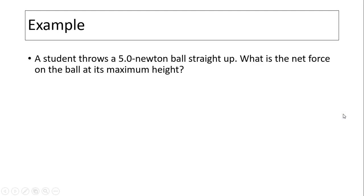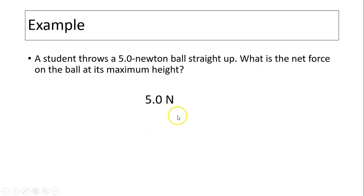Example: A student throws a 5-newton ball straight up. What is the net force on the ball at its maximum height? Because this is a projectile, the only force acting on it is gravity. Gravity equals the weight of the ball, which is 5 newtons. The answer is 5 newtons — not only at maximum height, but at every point along its path, the force is 5 newtons downward.